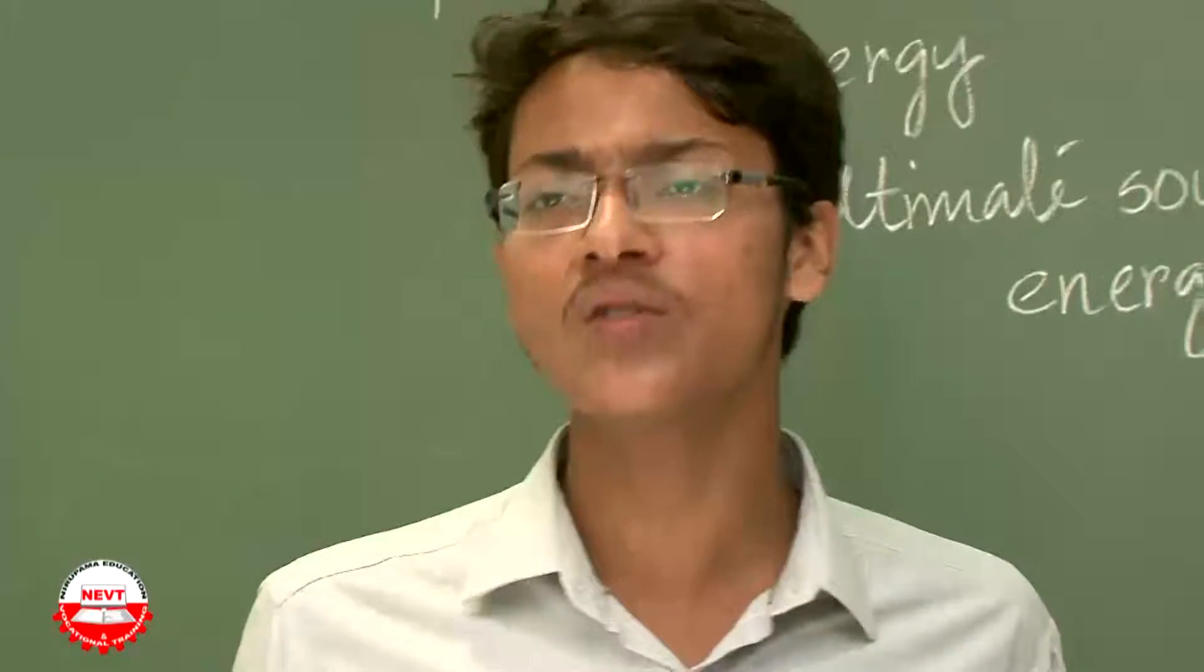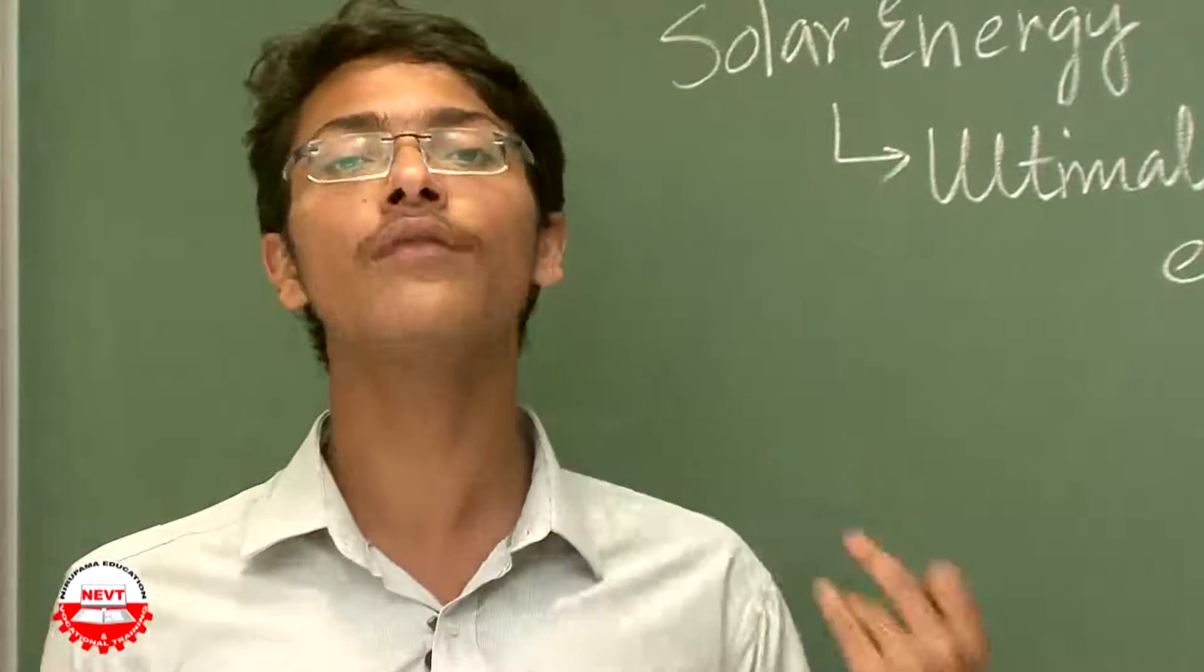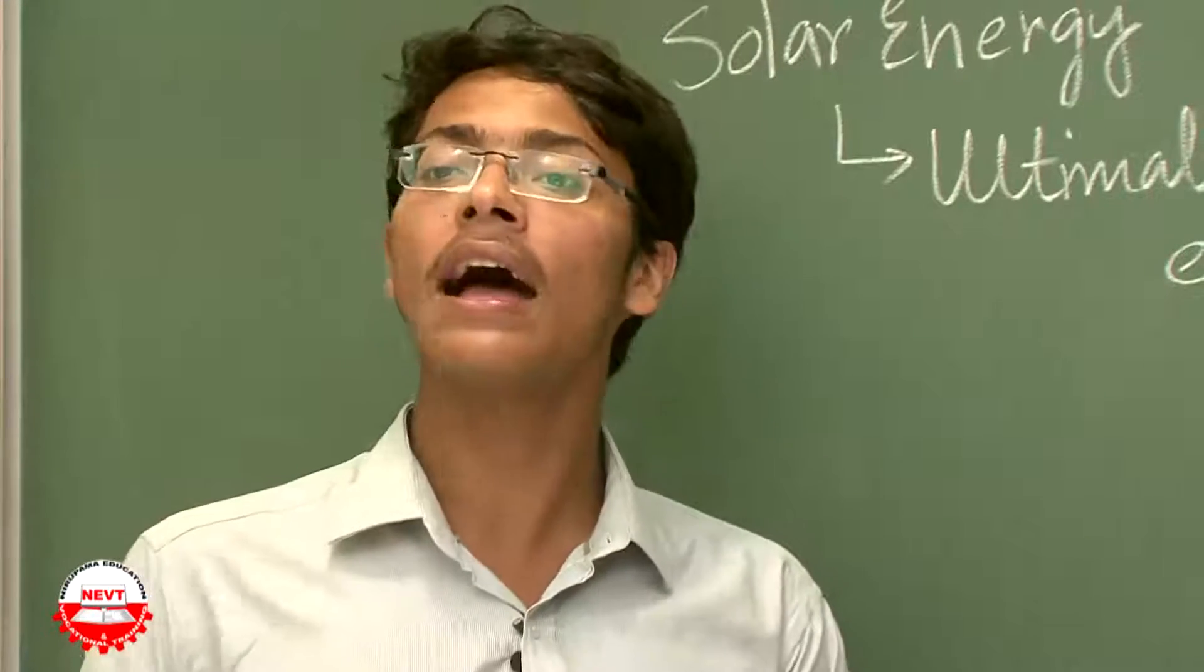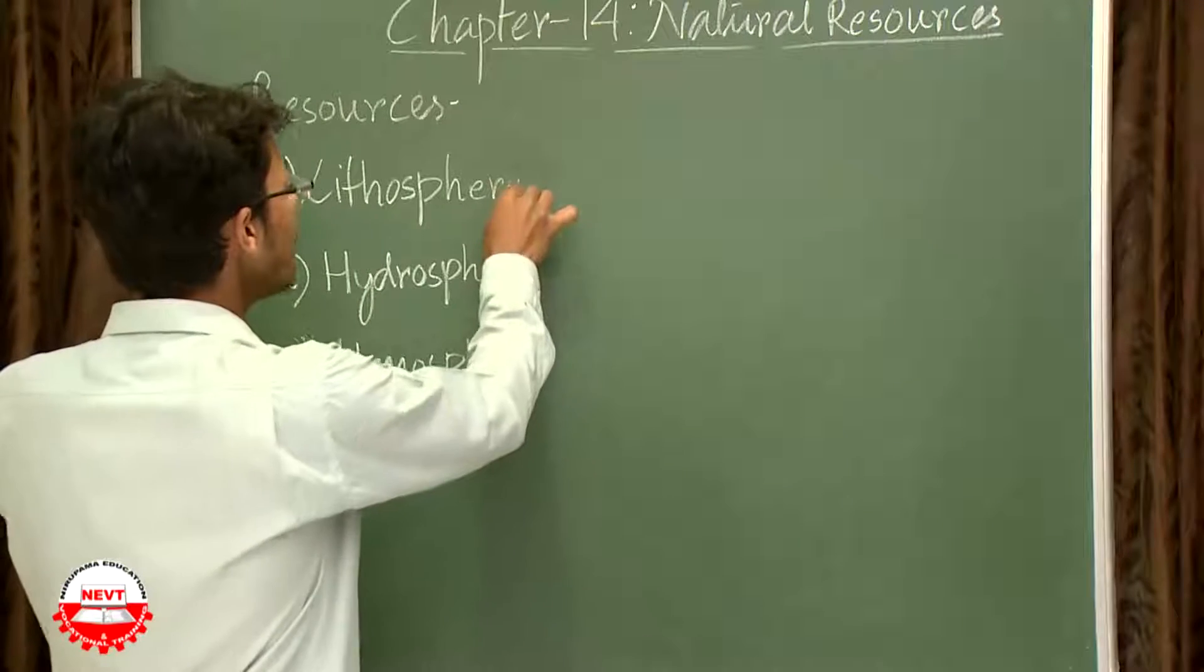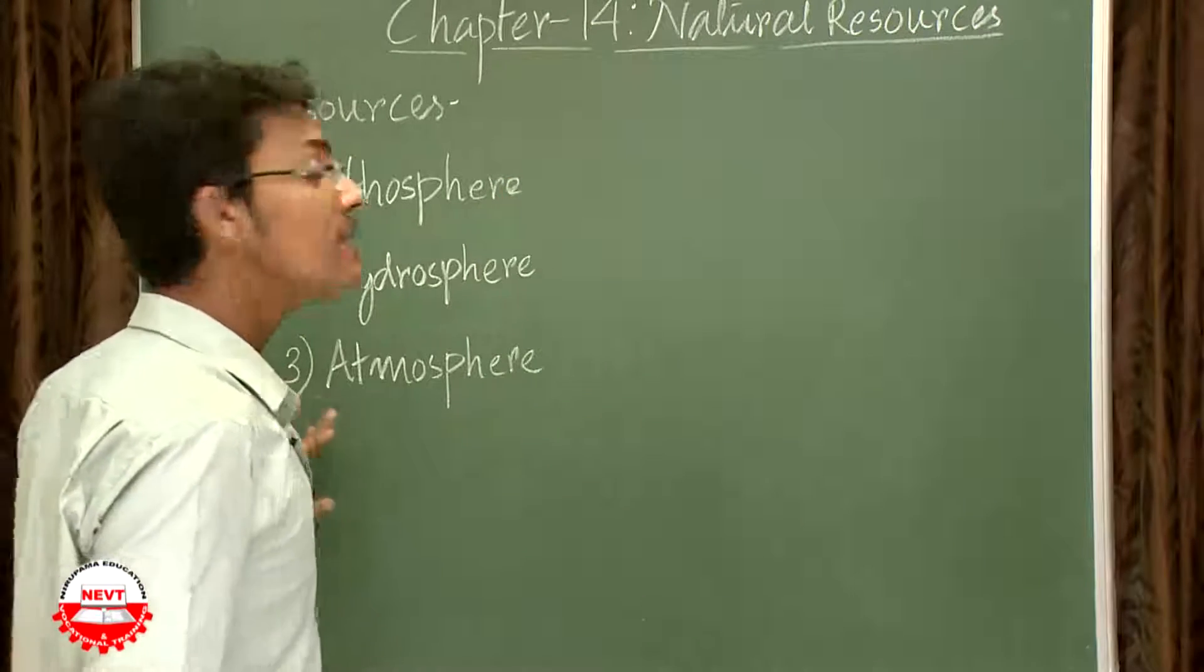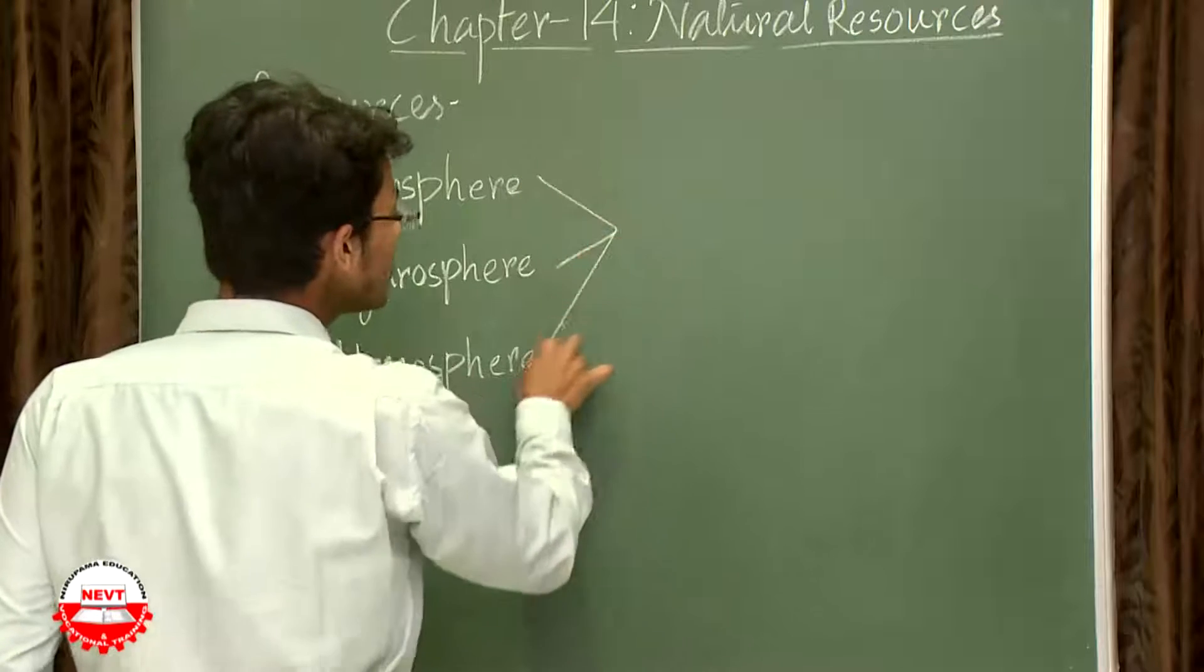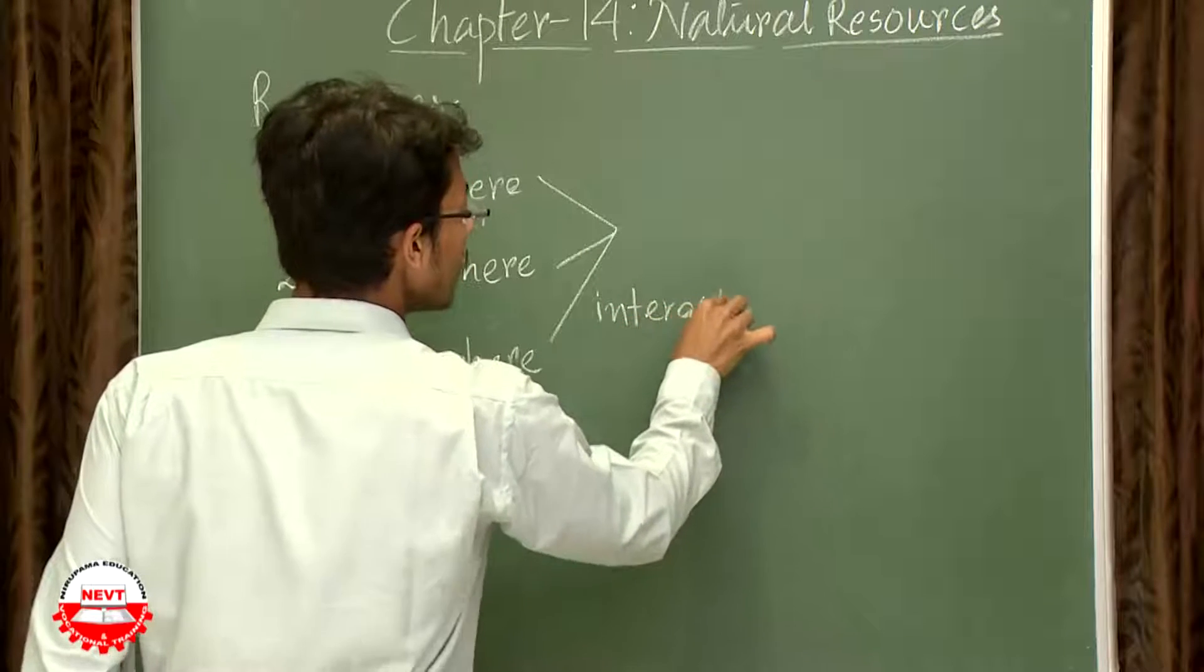So exactly what are these resources we are talking about? Broadly categorizing, the resources are of three types: lithosphere, hydrosphere, and atmosphere. And when these three resources interact with each other, they form what is called as biosphere.